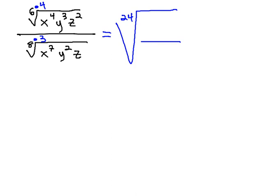When we multiply the index by a number, we also have to multiply the exponents by the same value. Doing this with the x, we get x to the 4 times 4 or 16, y to the 4 times 3 or 12, and z to the 4 times 2 or 8 in the numerator.